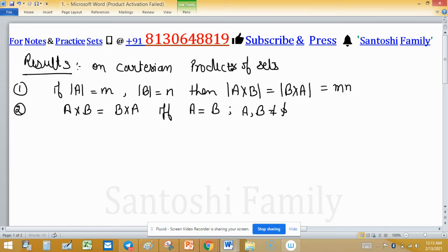Result 3: A cross (B union C). This will distribute as the distributive property in real numbers: A cross B union A cross C.